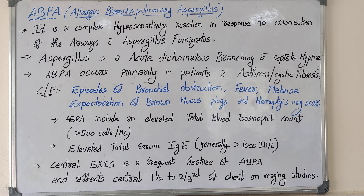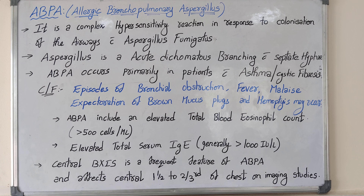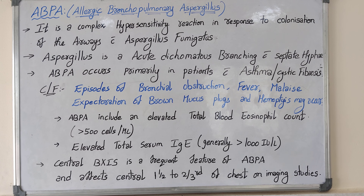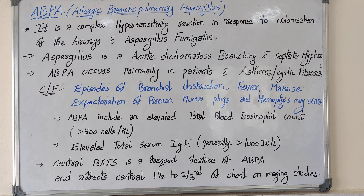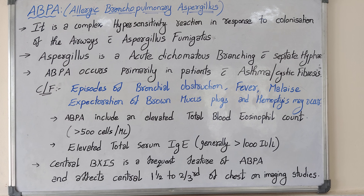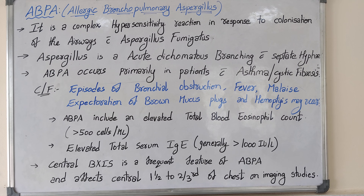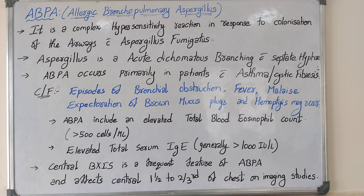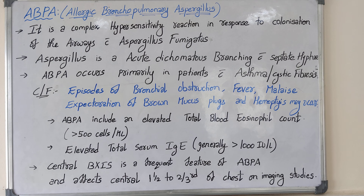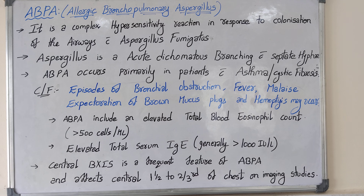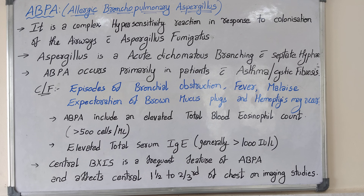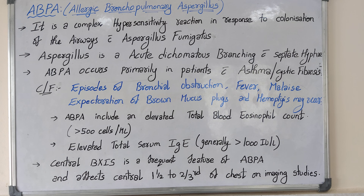patients with asthma and cystic fibrosis. The clinical features include episodes of bronchial obstruction, fever, malaise, expectoration of brown mucous plugs, and hemoptysis. ABPA includes an elevated total eosinophil count of more than 500